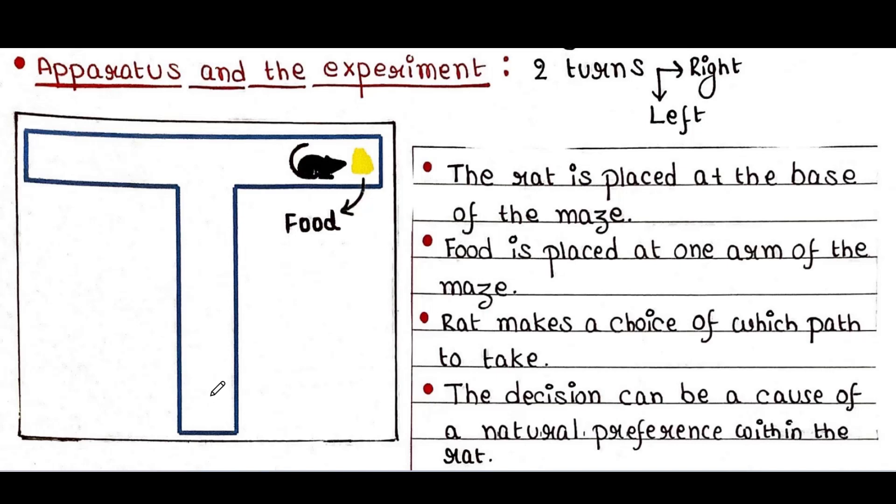If the rat can sense something, it will go to the food properly. We can see that the rat is here near the food.